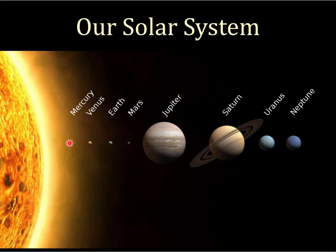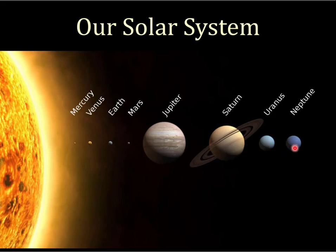The Jovian planets have a density of about one and a half. In fact, Saturn has a density of 0.7 — less than one — which means if you had a big enough bathtub, Saturn would float in it, in theory. The reason for that density difference is that Jovian planets are made out of gas, ice, or liquidy slushy stuff, not a whole lot of rock.